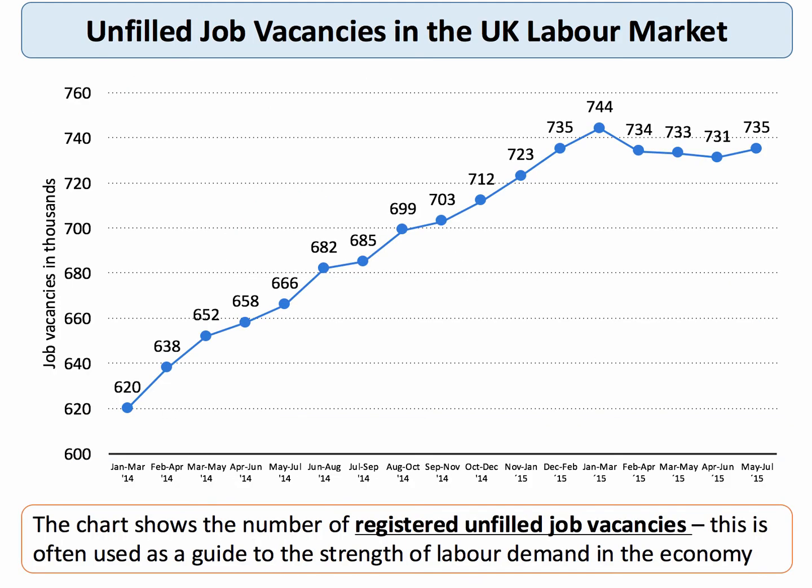How many vacancies are there? According to the official measure, through to the summer of last year, there are about 750,000 unfilled job vacancies — three-quarters of a million. Well, there's about 1.6 million unemployed. So if you do the quick calculation, there's about two unemployed per job.